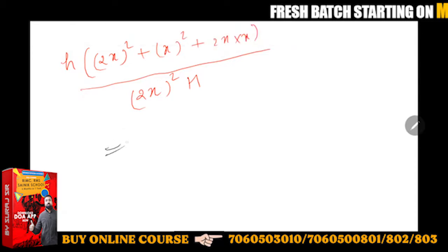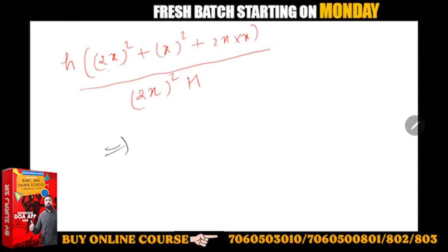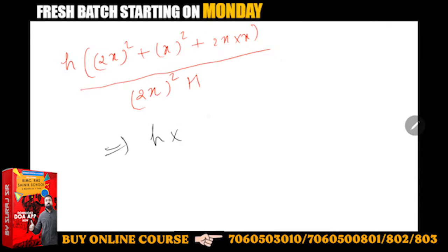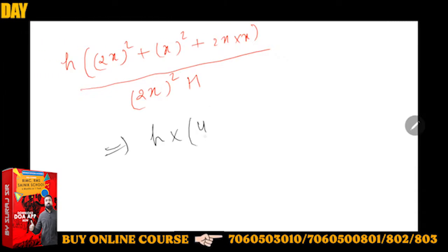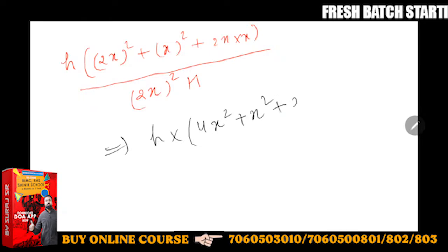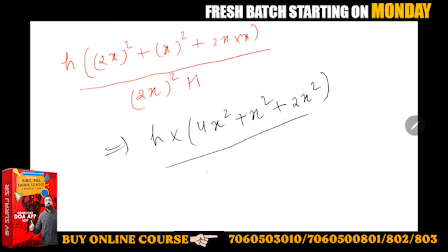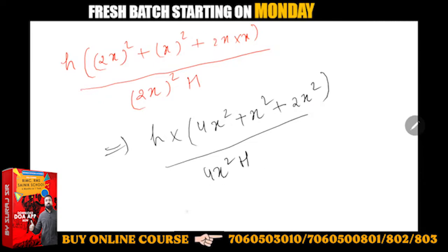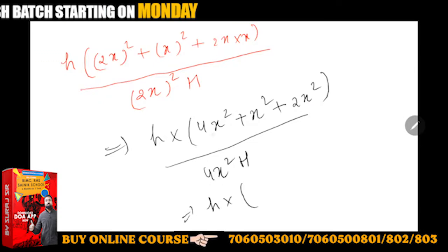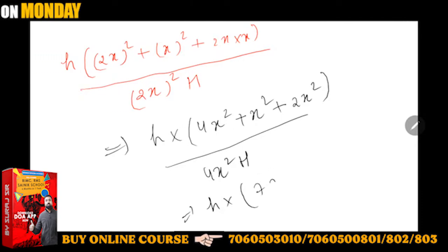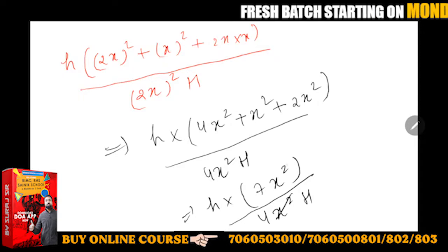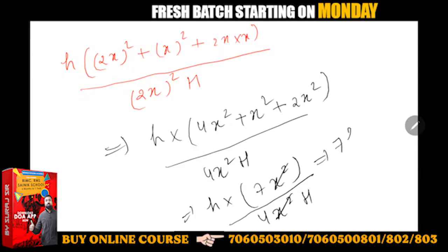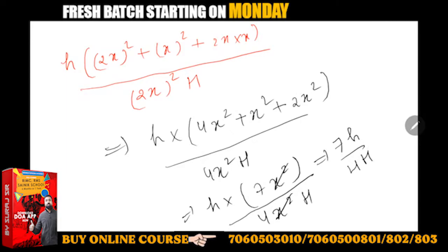If we solve this, it becomes h(4x² + x² + 2x²) upon 4x²H. This gives h(7x²) upon 4x²H. x² cancels, giving 7h upon 4H. Now what about this h?